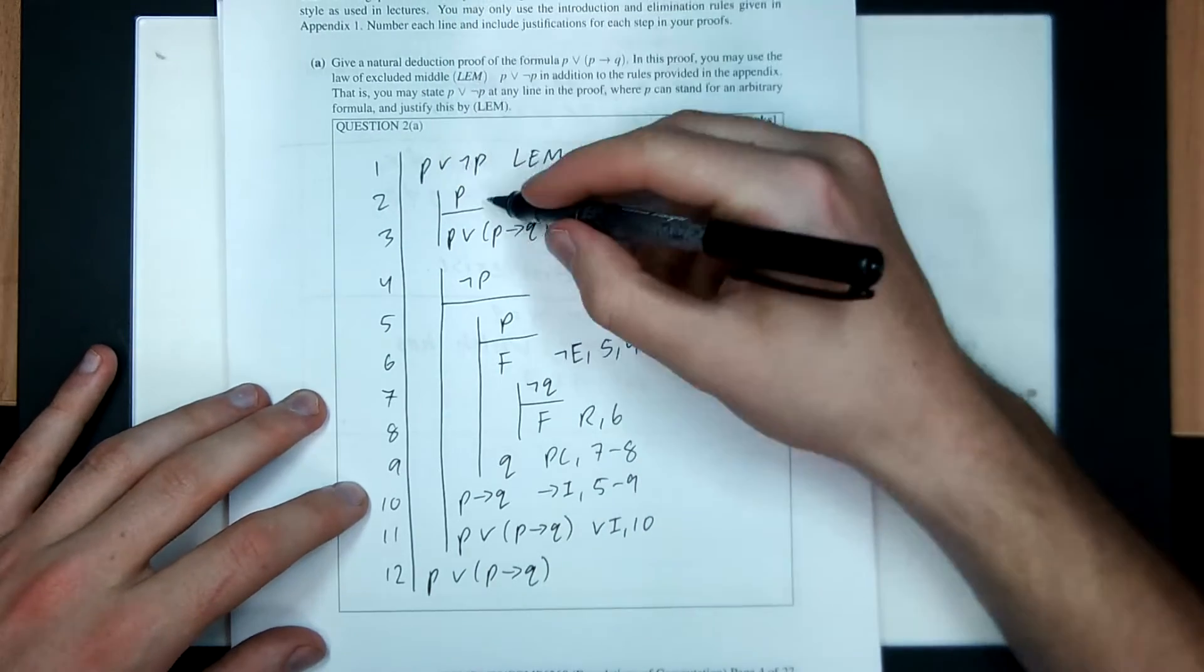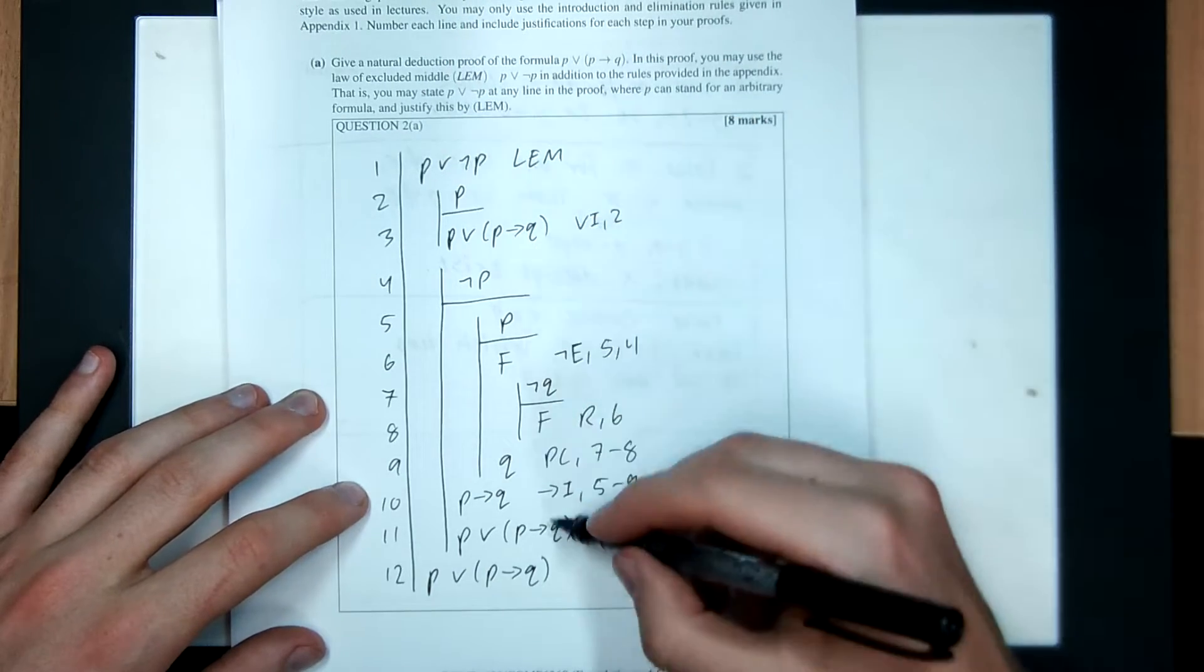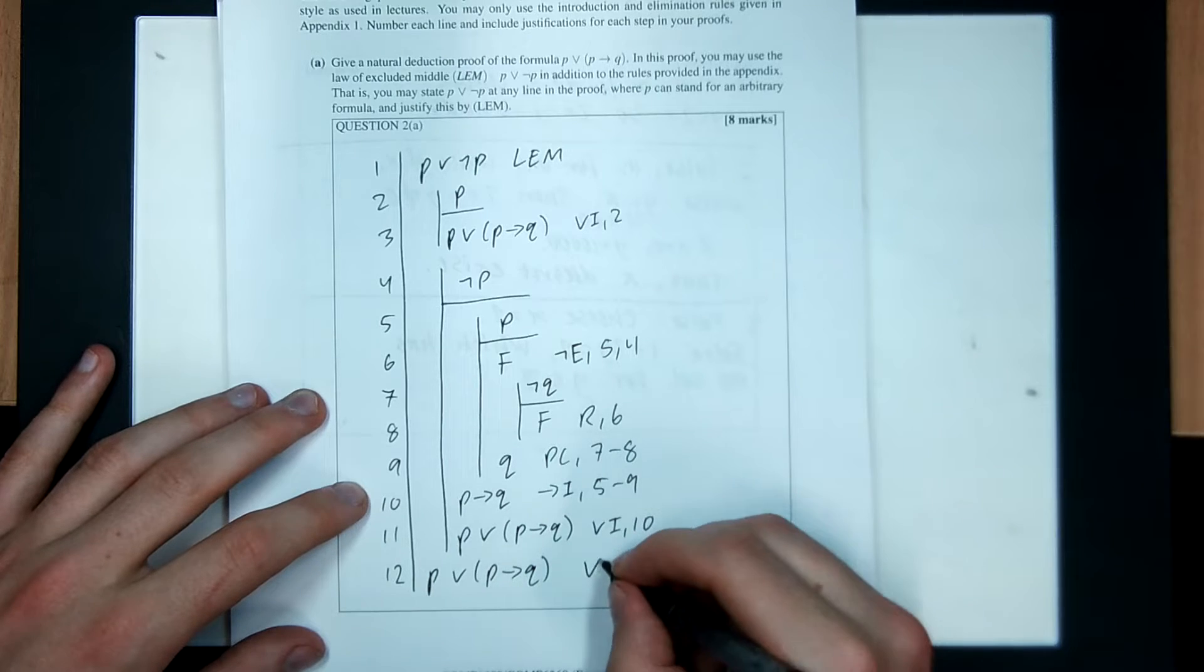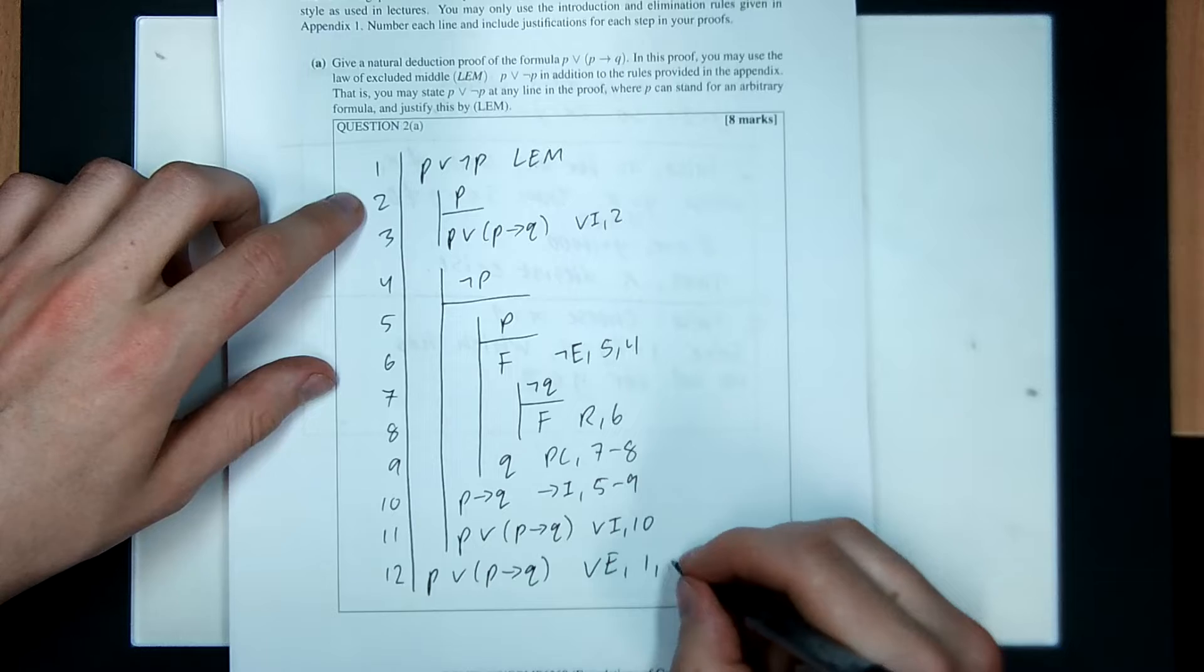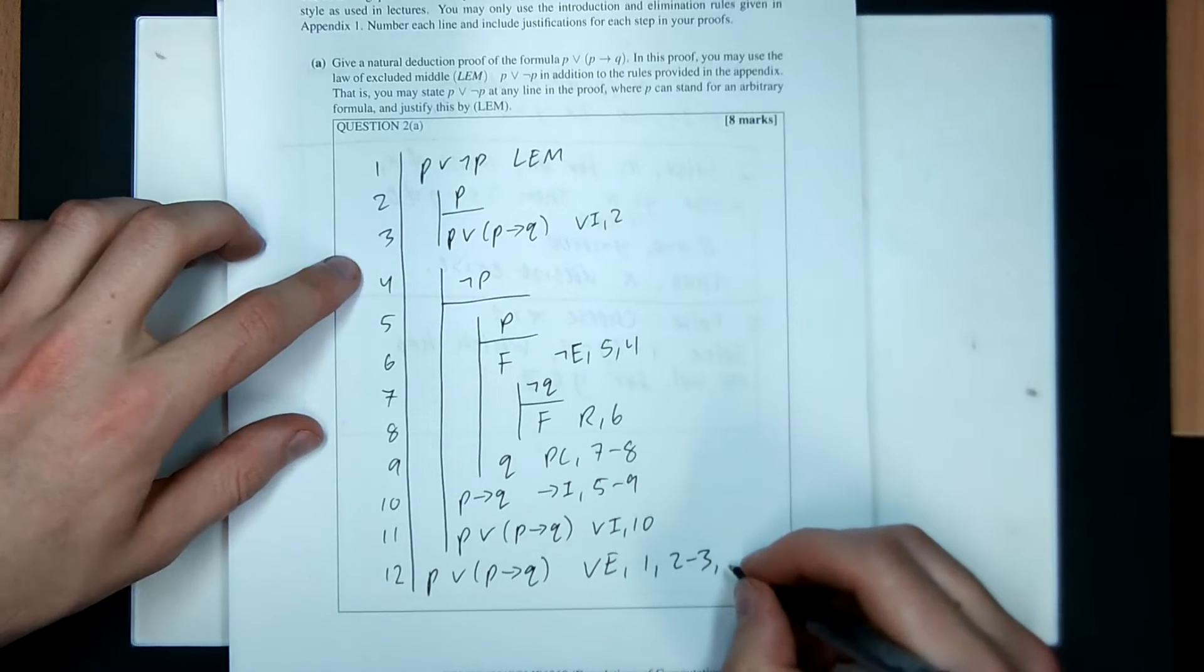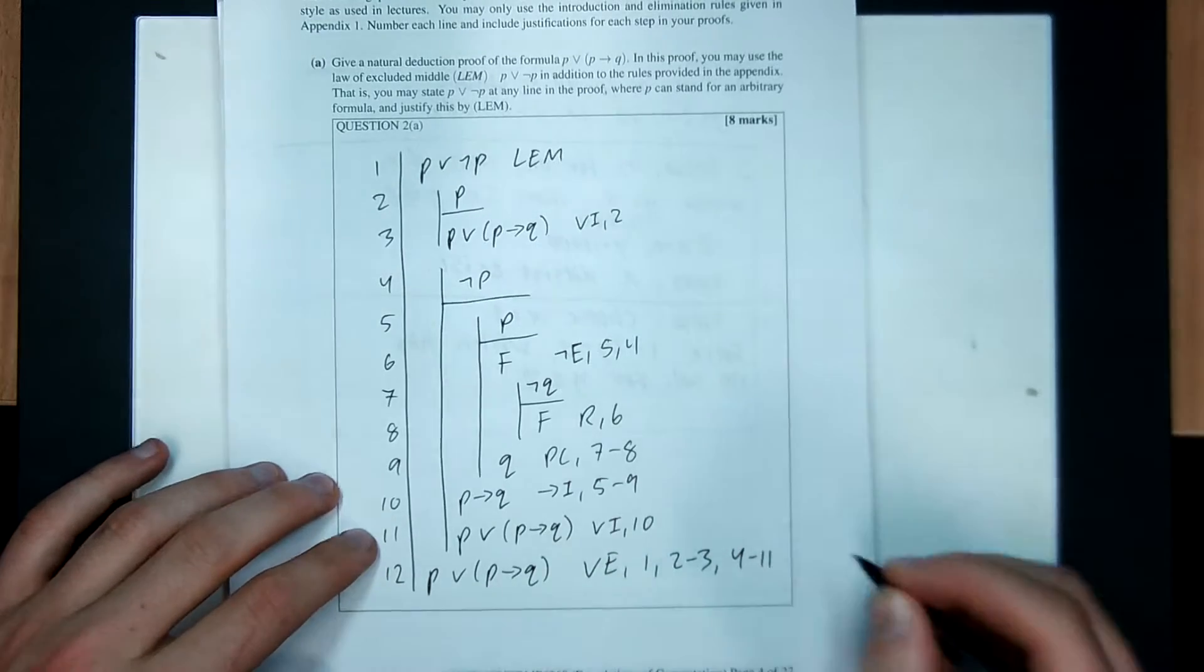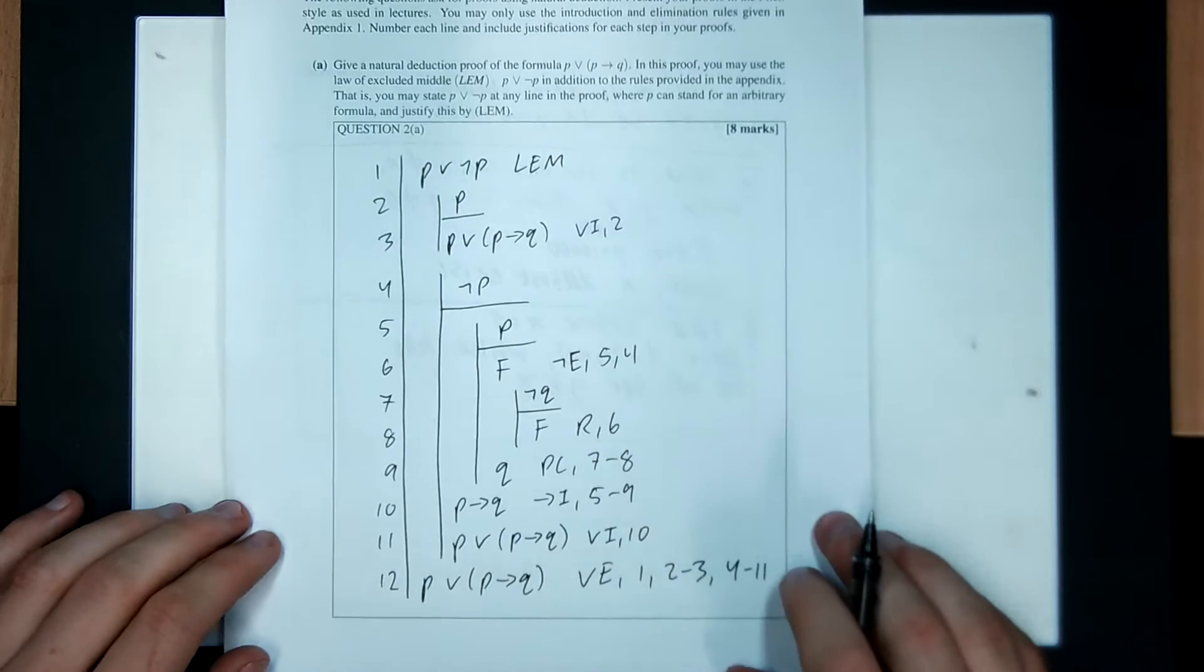OR introduction on 10. We have P or not P. Assume P, get the thing. Assume not P, get the thing, therefore get the thing. OR elimination line 1, line 2 through 3, line 4 through 11. Alright, cool. That's one part of question 2.